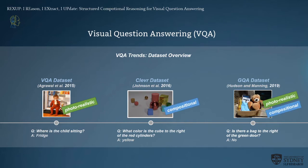In 2019, GQA finally introduced a dataset with photorealistic images and computational questions, and this problem is what the current VQA field is focused on, which requires strong semantic reasoning and visual richness of real-world images.